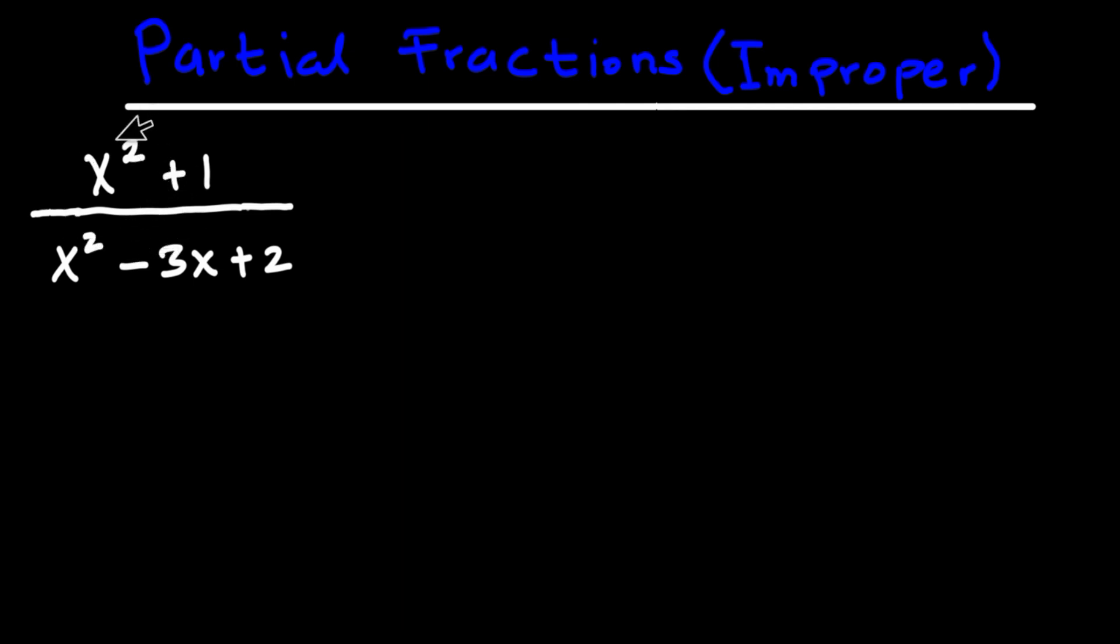So the fact that we have the degree of this one to be 2 and the degree of the denominator to be 2 as well make this fraction improper. And in this case, how do we set the partial fractions for this? First things first, I'm going to put the division bar down just like this.